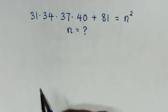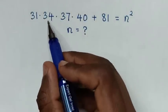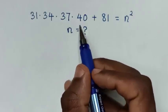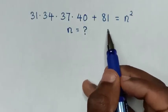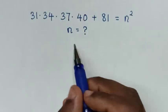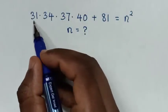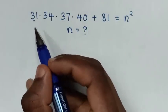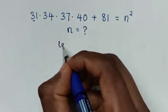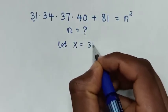Hello. How to solve 31 times 34 times 37 times 40 plus 81 is equal to n squared — to find the value of n from this equation. So first we make 31 common by letting x equal to 31.